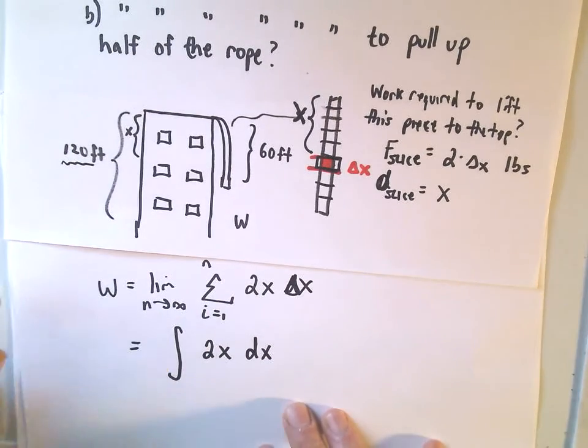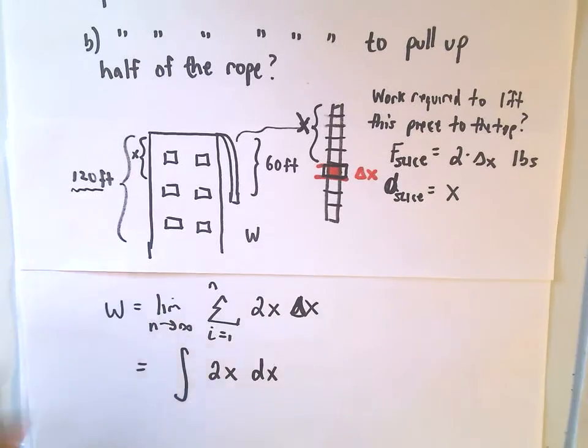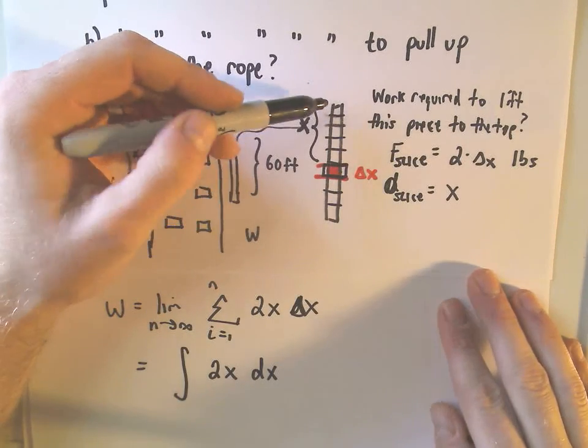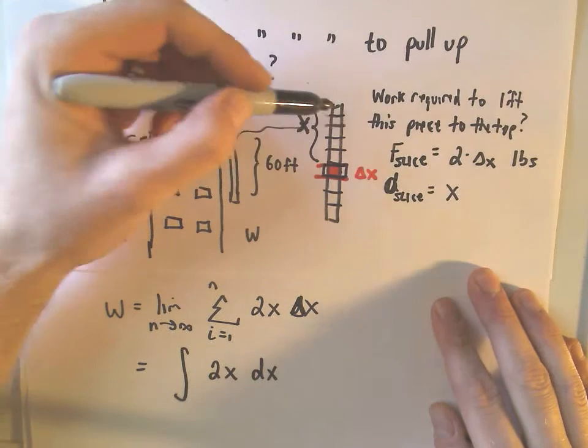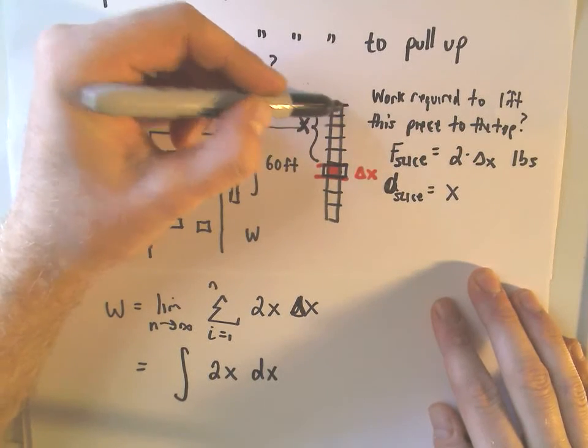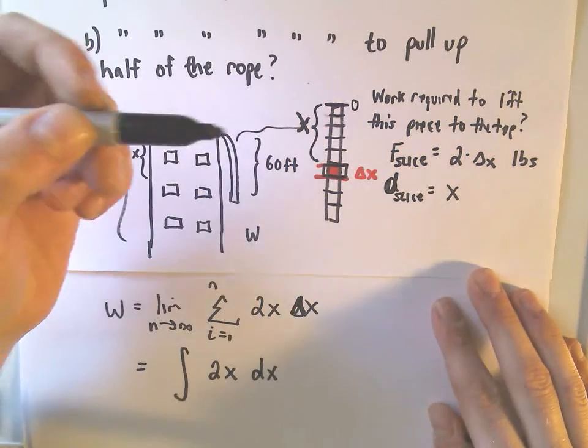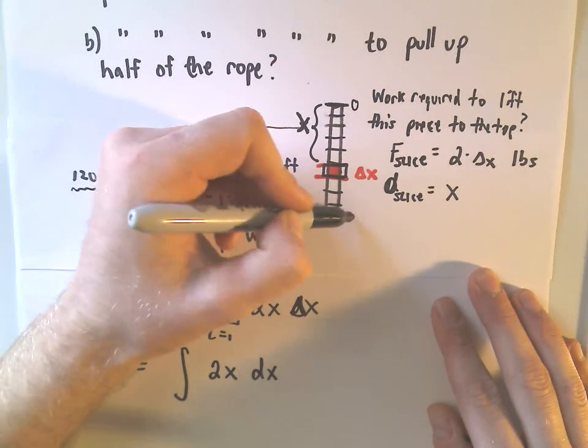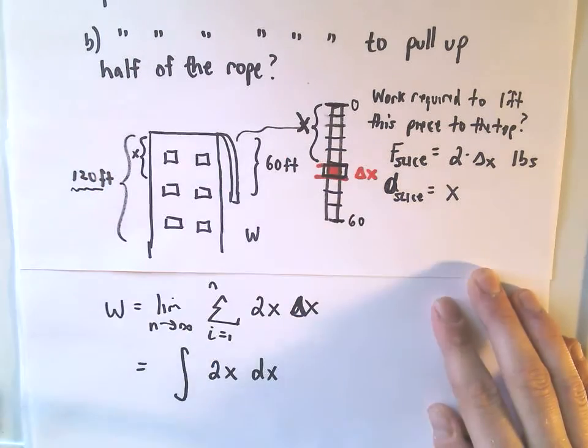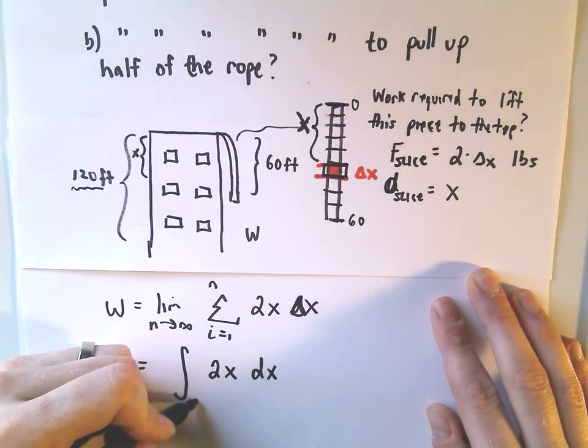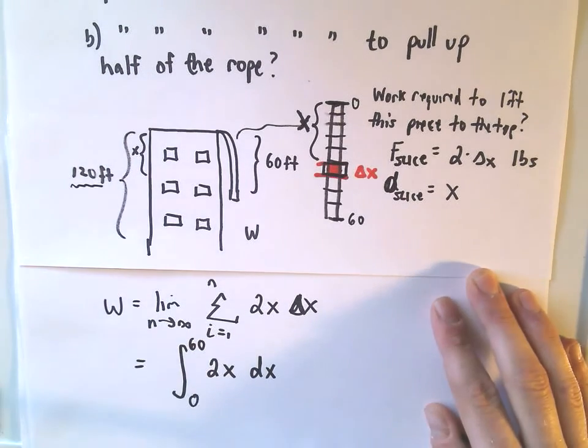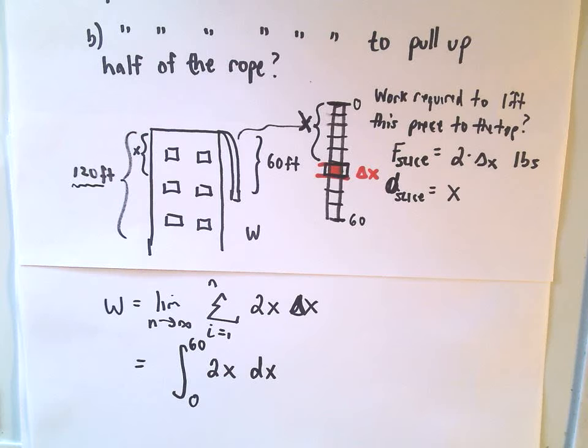So now we have to think about our limits of integration as well in this problem. But, since we want to pull up the entire rope, what values would x vary between? Well, the top of the rope, if we're measuring x from the top, that would be a distance of 0 units away from the roof, from the top of the building. And then we would have to go all the way down, to get to the bottom of the rope, we would have to travel 60 feet down, because the rope was 60 feet long. So our limits of integration would simply be 0 to 60. So the length of the rope gets taken into consideration in the limits of integration.